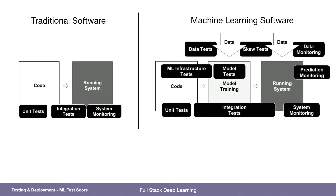In a machine learning software system, you have your code and unit tests, but the code actually outputs something that is a process — model training — which is a combination of your code and data. The result of that is what gets deployed as a running system, responding to other data that comes in. So there are additional tests now: data tests, data skew tests, maybe prediction monitoring, and the integration tests have to cover more surface area.